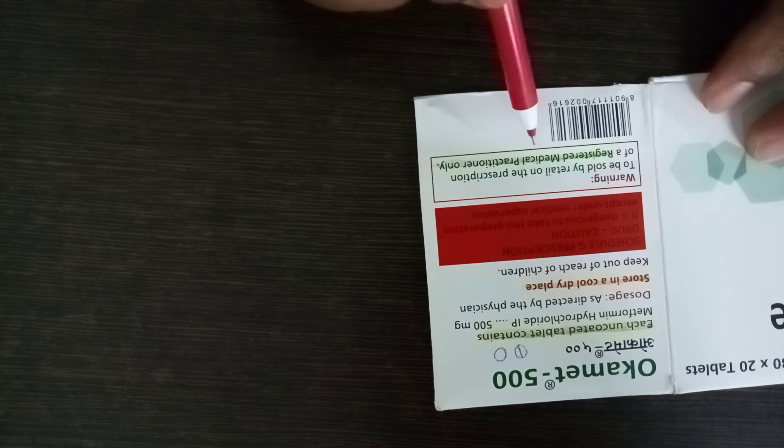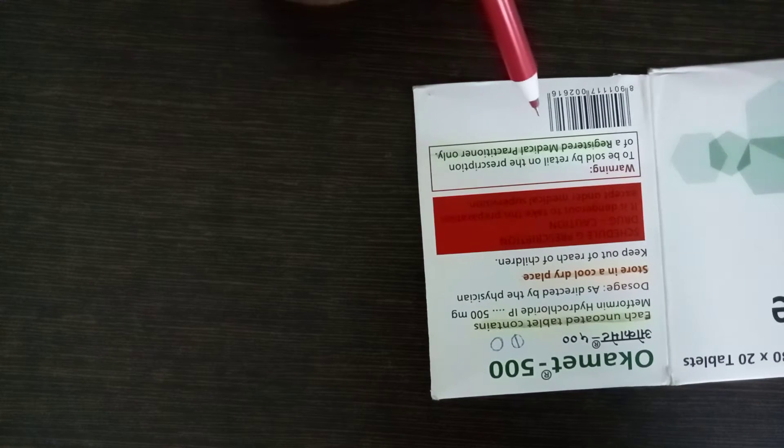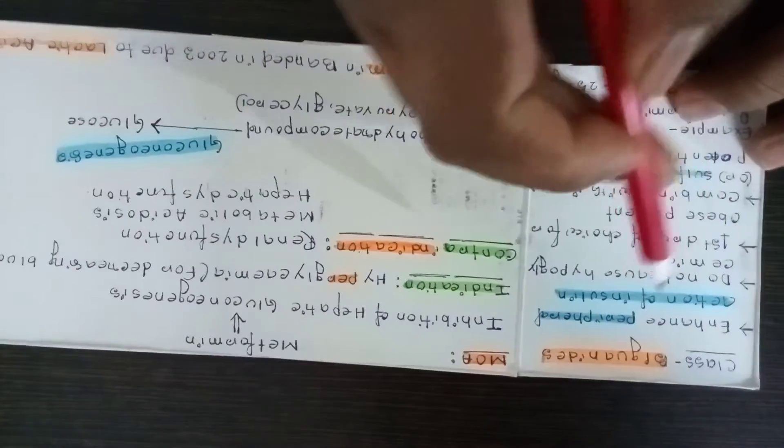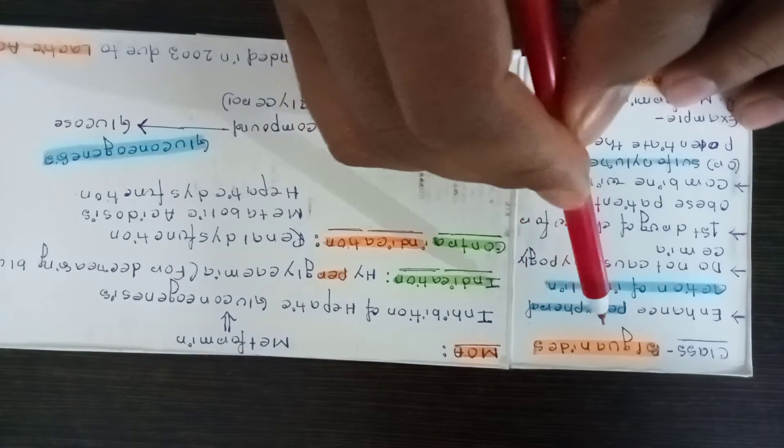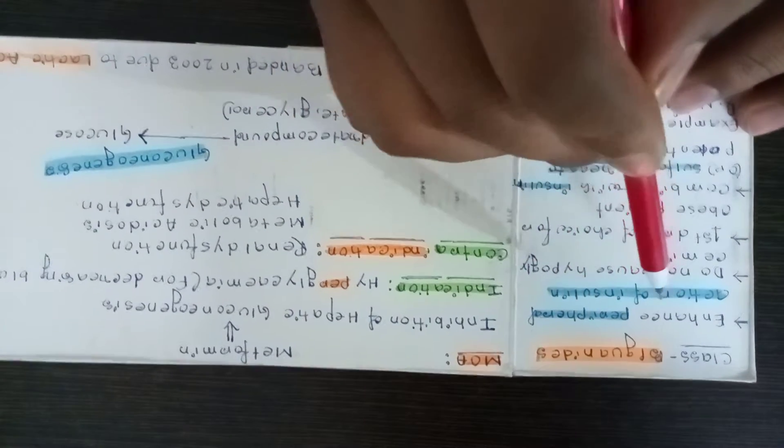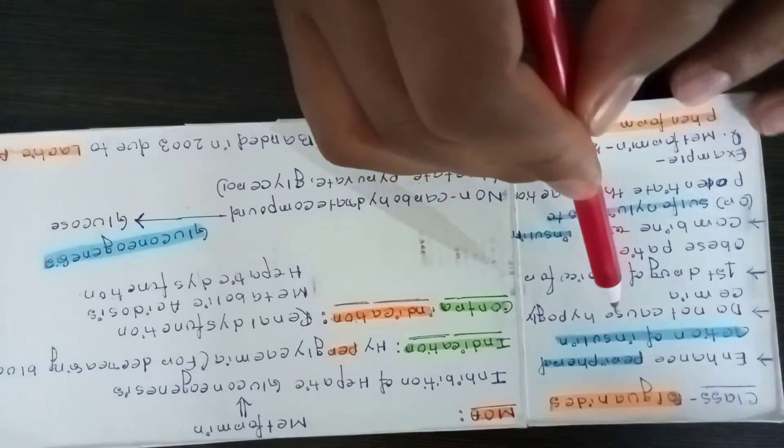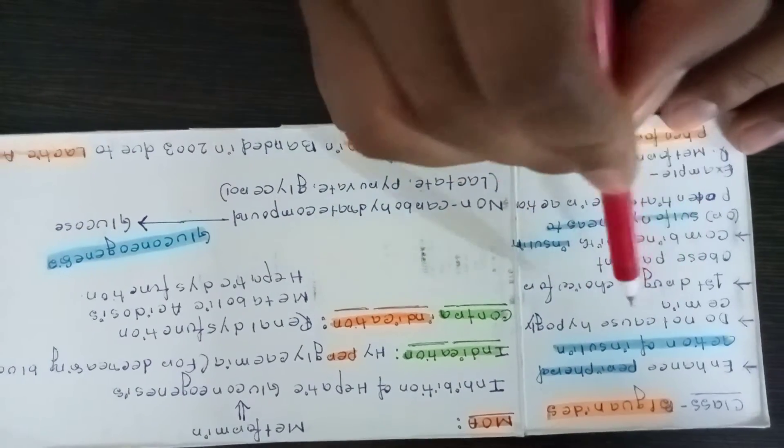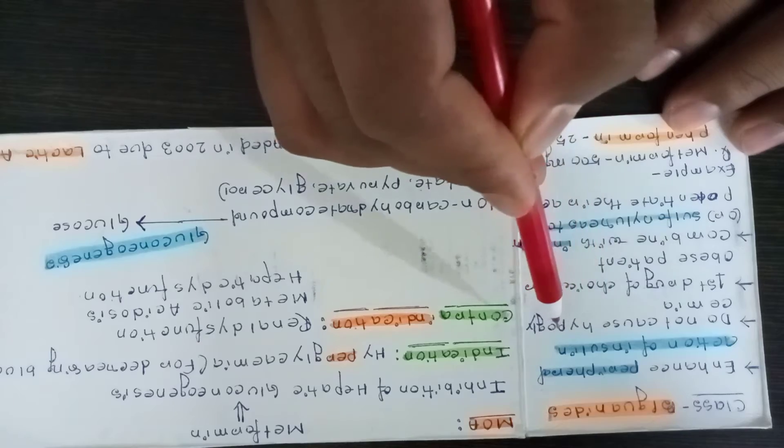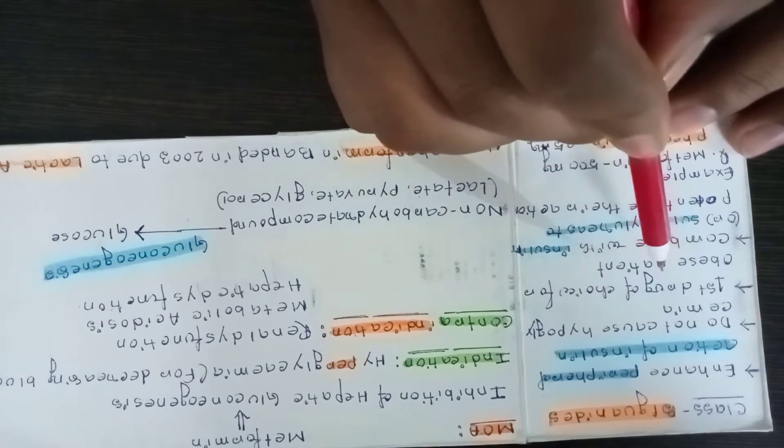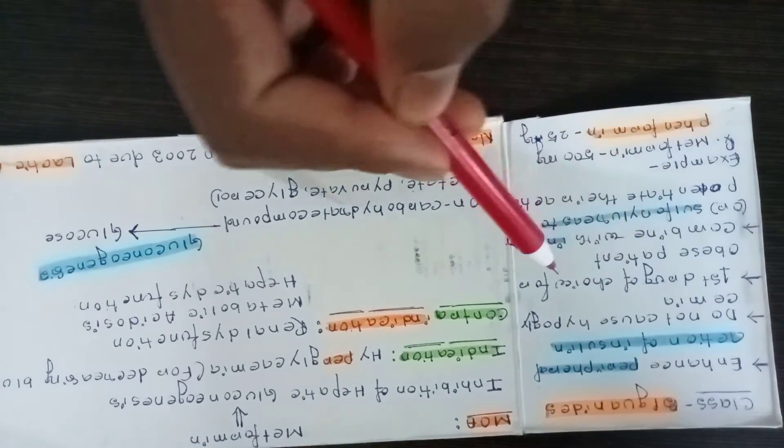This drug is mainly commanded by biguanides. The drug enhances peripheral action of insulin and does not cause hypoglycemia. This is a first-line drug for obese patients.